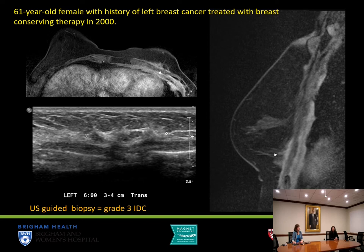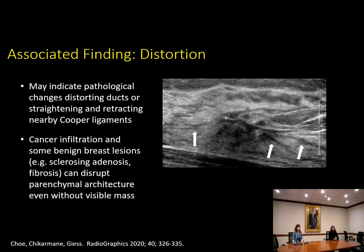This is a challenging lesion — if performing a screening study it might be hard to detect as a discrete finding, but it's much more evident when you know you're looking for a specific finding to correlate with MRI. Distortion as an associated finding is important to recognize sonographically, because it can indicate pathologic changes causing ductal distortion and straightening and retracting of nearby Cooper's ligaments. We worry most about cancer infiltration causing that distortion, but benign lesions including sclerosing adenosis and fibrosis can do it as well.